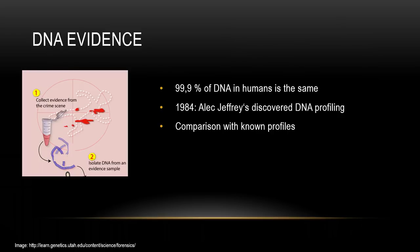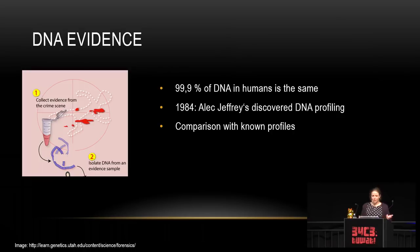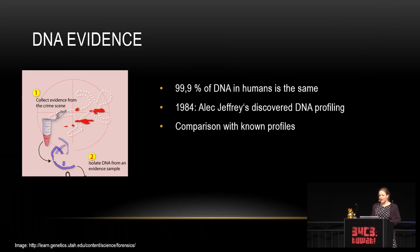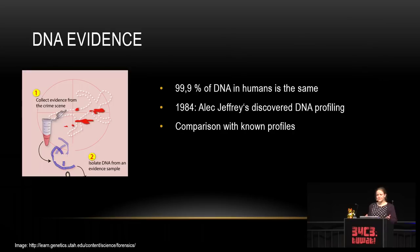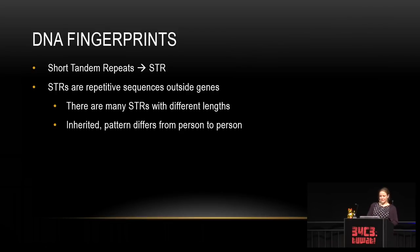DNA is also used as evidence in crimes. Whereas 99.9% of our DNA is the same, 0.1% differs from person to person. In 1984, Alec Jeffries discovered DNA profiling, where he saw he could use this 0.1% to identify people and compare DNA profiles between individuals — also used for paternity issues. This is often referred to as DNA fingerprinting.